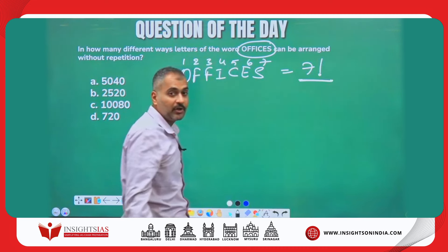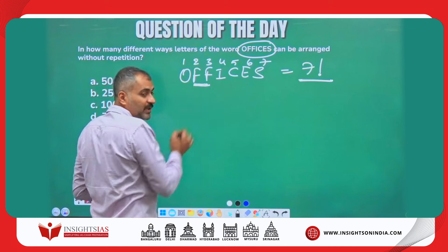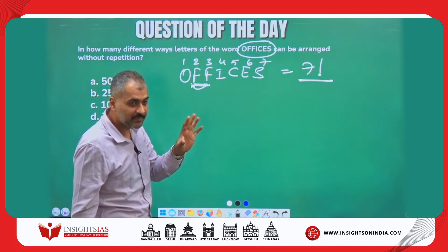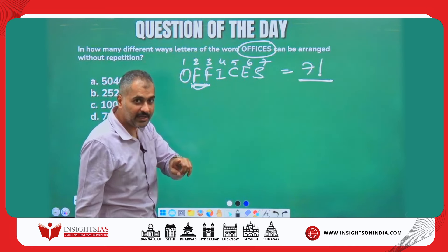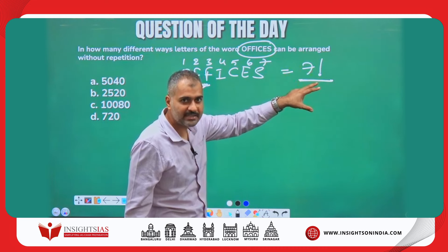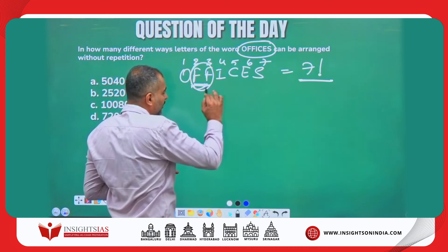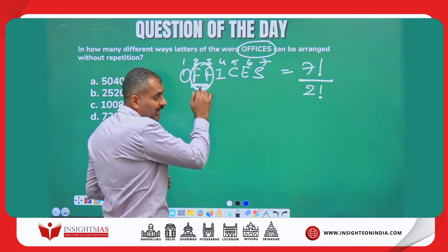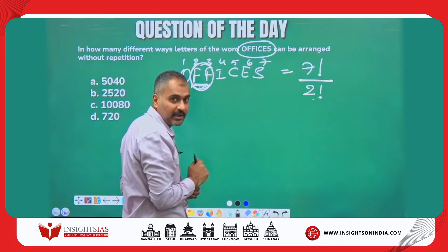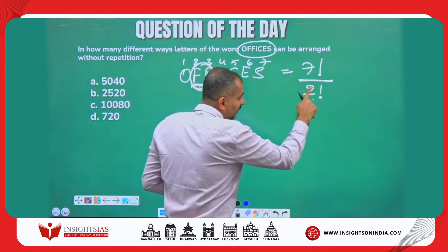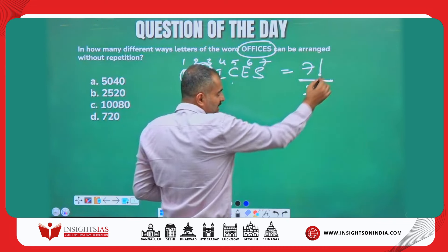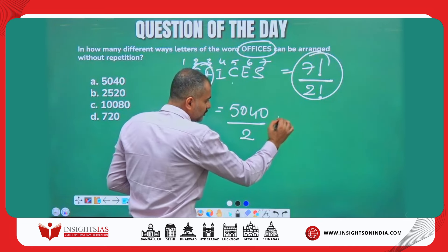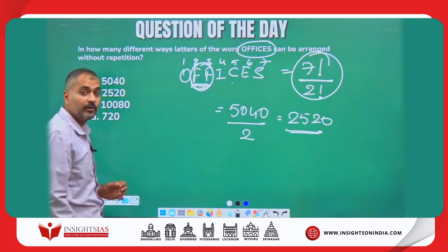However, notice that F appears twice. If these two F's swap positions, the arrangement looks the same — so repetition has occurred within the 7 factorial count. To avoid counting repeated arrangements, we divide by 2 factorial for the 2 F's. In general: if 3 F's, divide by 3 factorial; if 2 F's and 2 C's, divide by 2 factorial × 2 factorial. So the answer is 7 factorial divided by 2 factorial. 7 factorial is 5040, divided by 2 gives 2520.